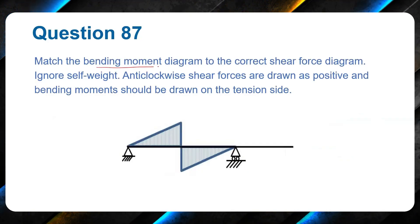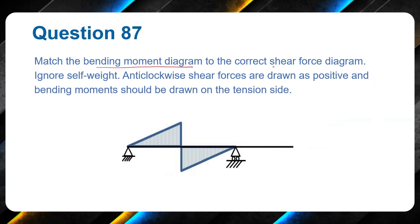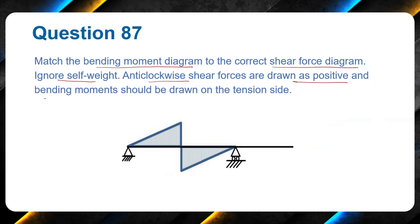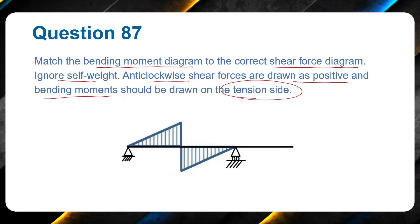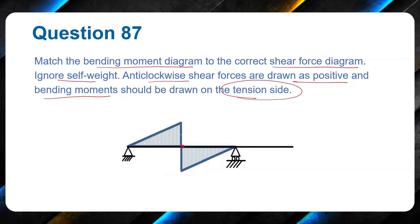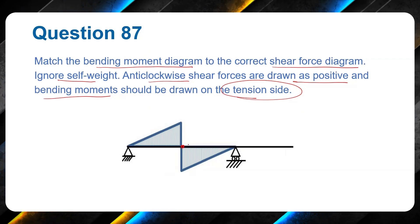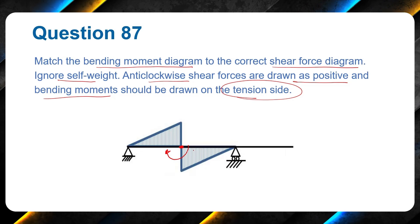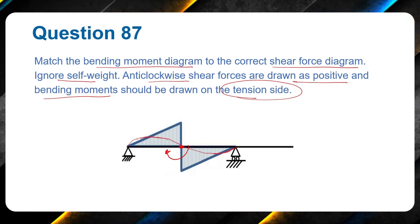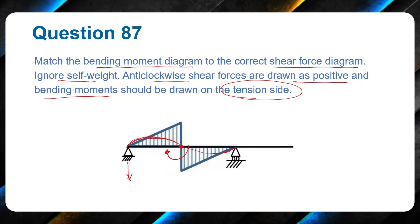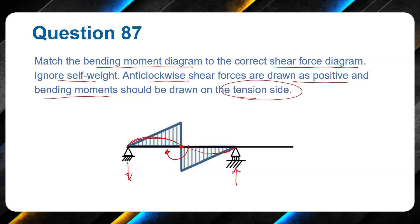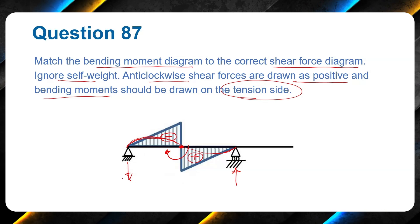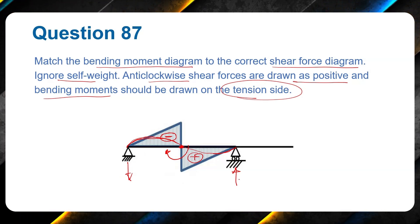Next question: match the bending moment diagram to the correct shear force diagram, ignoring self-weight. This bending moment diagram looks like a point moment is applied. A clockwise moment creates a deflected shape where the force on one side is downward and on the other upward, producing a hogging moment on one side and a sagging moment on the other.